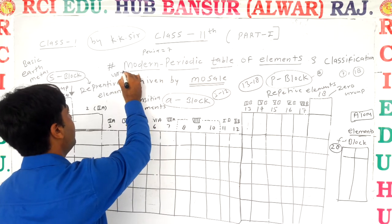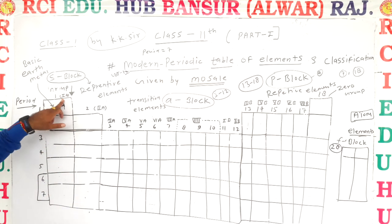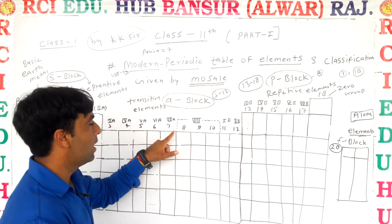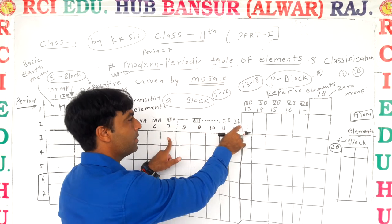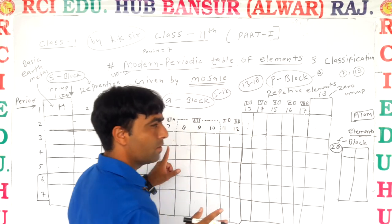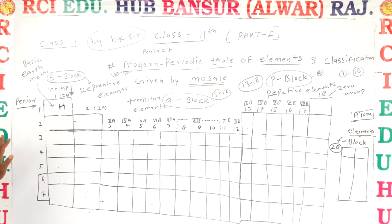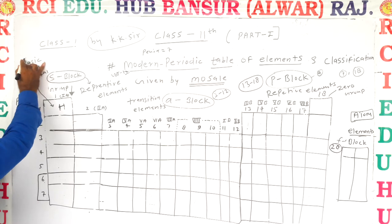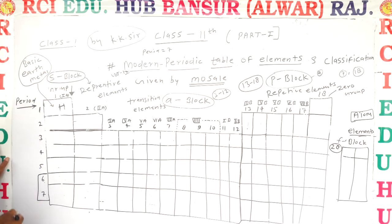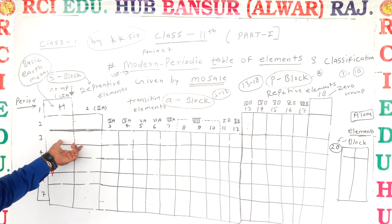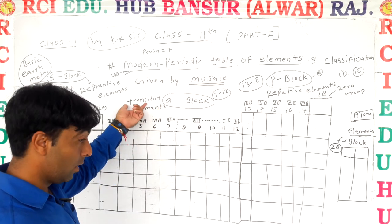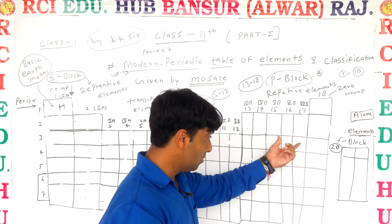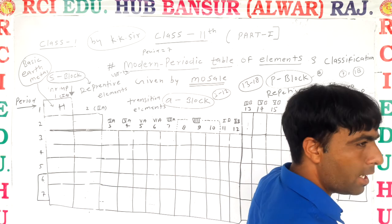Groups are also represented as first A, second A, third A, etc. In this there will be many types of elements. These are called basic nature elements, also called D-block elements, with another name: transition elements.